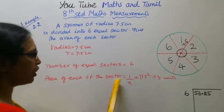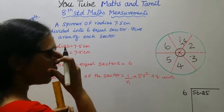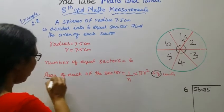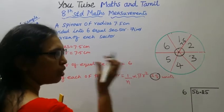Area of each of the sector: 1 by N into pi r square units. Square units.